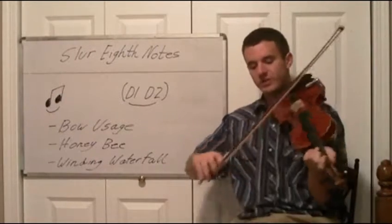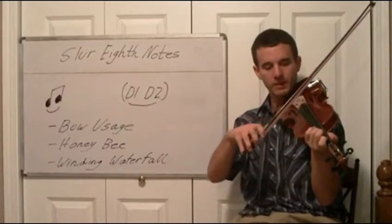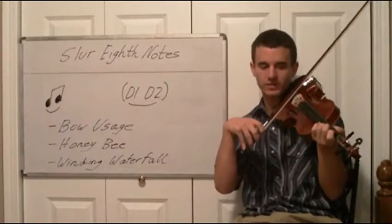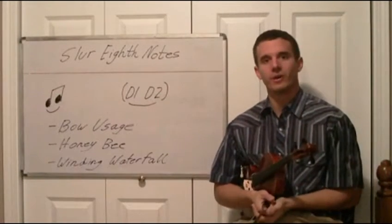Yeah, get familiar with slurring these together, making them even, not using the whole bow, and then coming back from down low into the other direction without stopping the bow. So once you get familiar with that, go on to the next lesson.